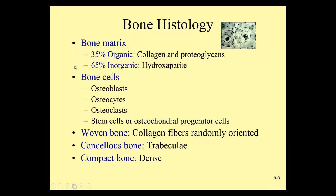Looking at the different cells within bone, there are three major cells actively at work. Osteoblasts build bone; osteocytes maintain the bone after it's been ossified and built; and osteoclasts break down or cleave bone — so 'clasts' cleave, 'blasts' build, and osteocytes maintain. All of these cells originate from stem cells that differentiate into the three different types depending on signals within the body.